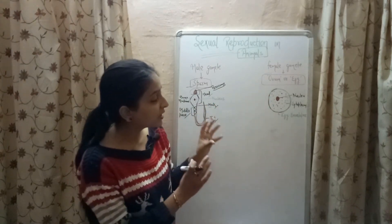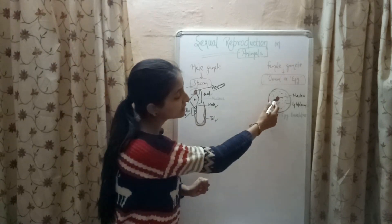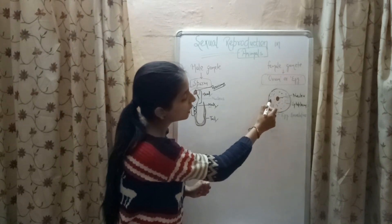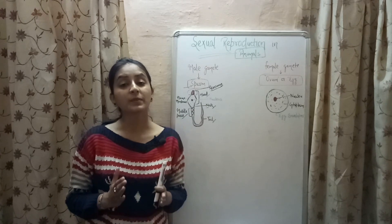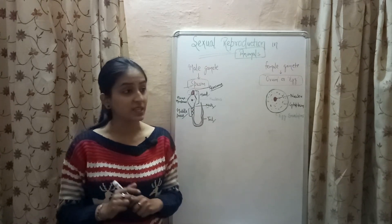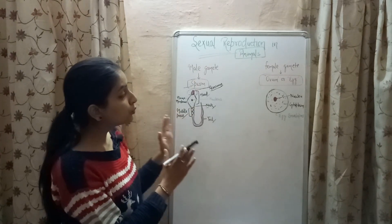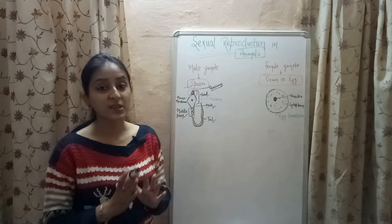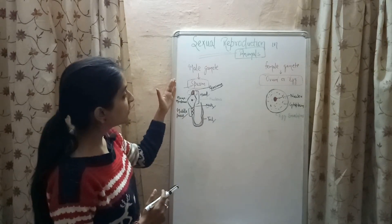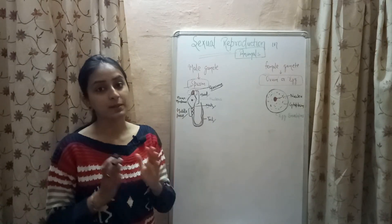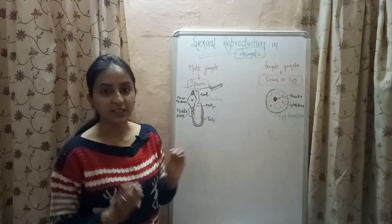The ovum has a spherical structure and consists of a nucleus which is surrounded by dense cytoplasm. The ovum is non-motile in nature, which means it does not consist of a tail. So the two gametes in animals include sperm, present in males, whereas ovum or egg is present in females.